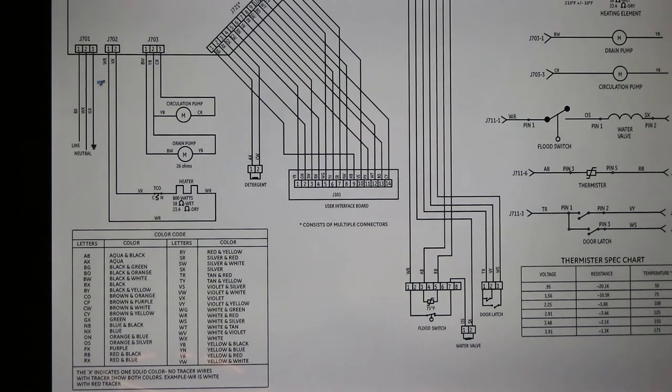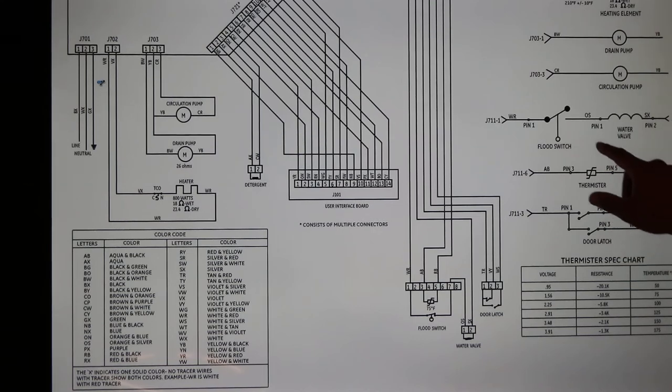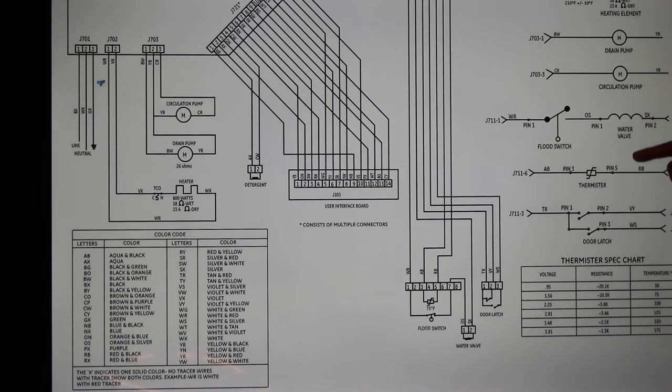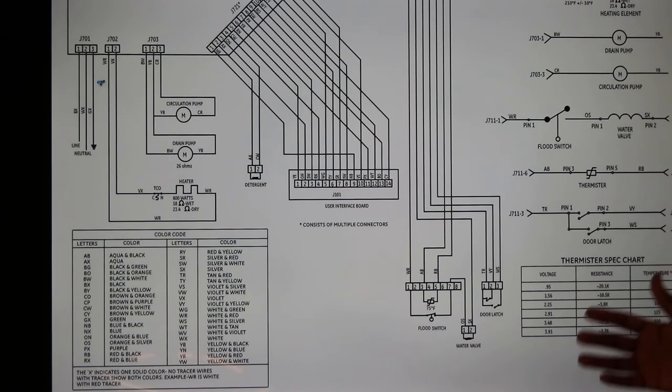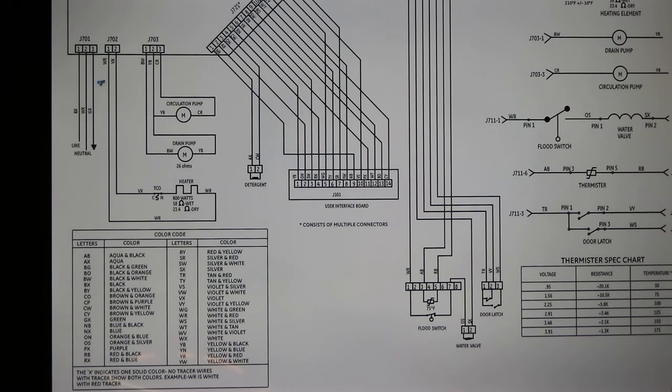We also have the strip chart here which will break out and tell you how power flows on each one of these: heating pump, drain pump, circulation pump, water valve, door latch. Then you're gonna have your spec chart, so we're gonna go into each one of these.